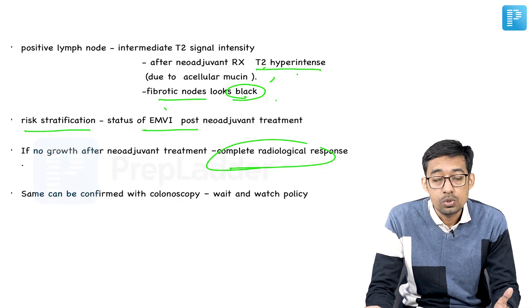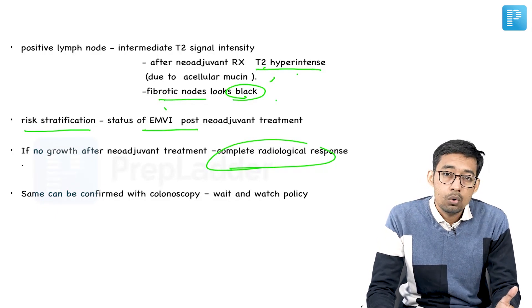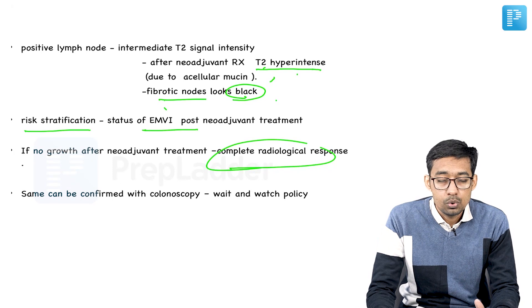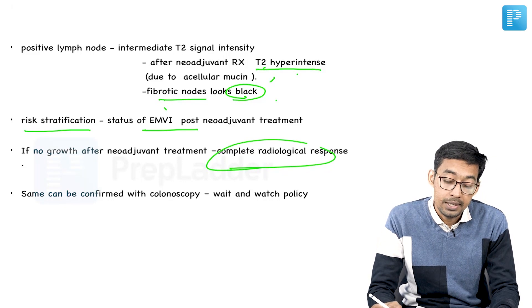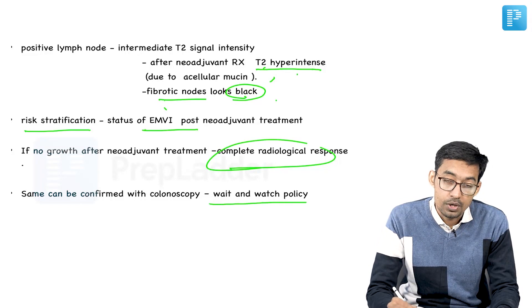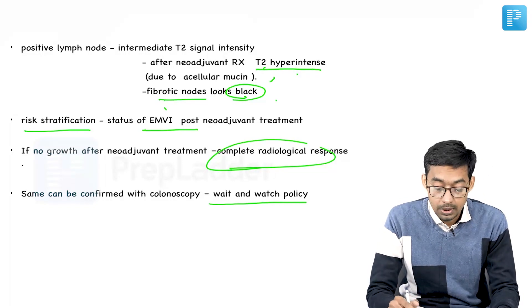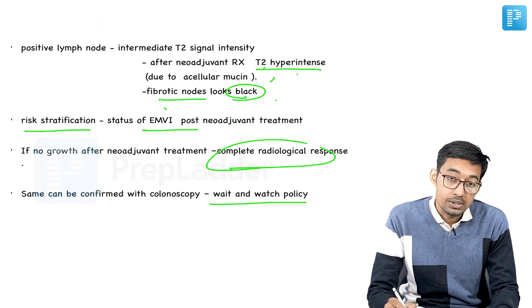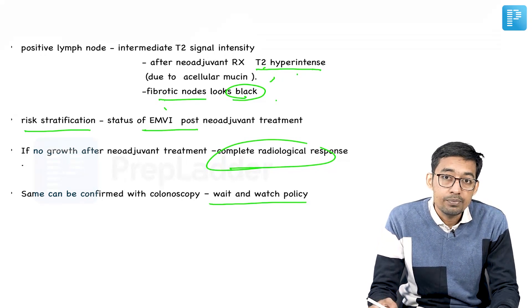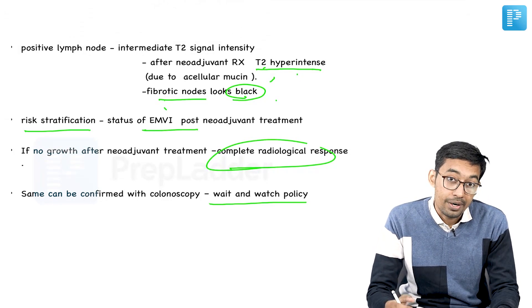If colonoscopy also does not show any mucosal changes or shows normal mucosa — completely no tumor — and MRI also shows no tumor, then we can say that the tumor has responded completely, and that patient can be managed by a wait-and-watch policy. In those cases we do not have to intervene surgically, but we have to keep surveillance of that patient for recurrence.